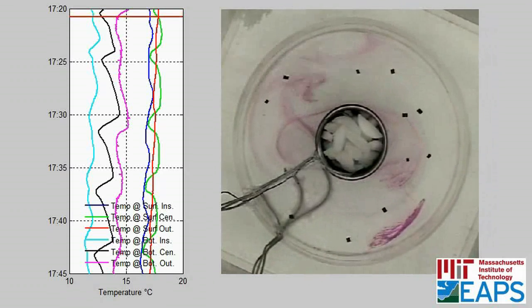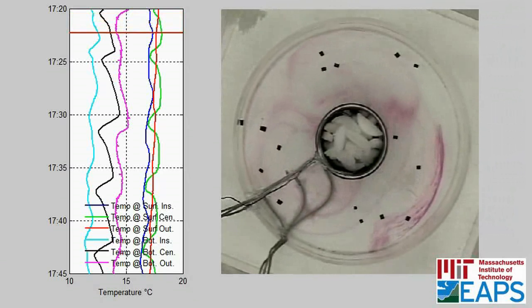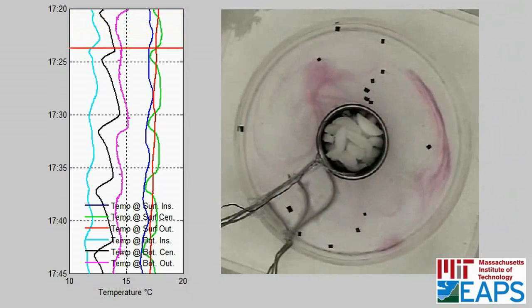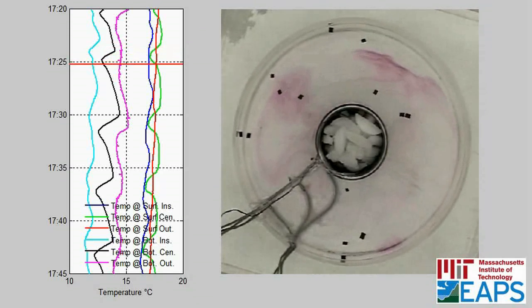Now we see the temperature recording that we took at six positions in the tank: three positions at the bottom of the tank, and three at the top of the tank (that is at the surface of the water), alongside the time-lapse video.